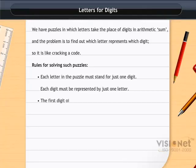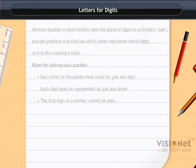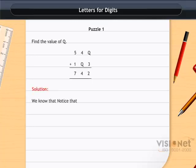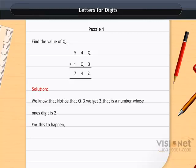The first digit of a number cannot be zero. Look at puzzle 1 and find out the value of Q. We know that from Q+3 we get 2, that is a number whose ones digit is 2. For this to happen, the digit Q must be 9. So the puzzle can be solved as shown.